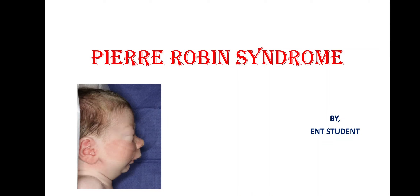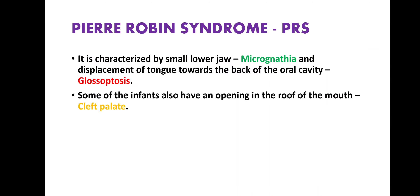Welcome to ENT Student. We are discussing Pierre Robin syndrome. Pierre Robin syndrome is characterized by a small lower jaw — micrognathia — and displacement of the tongue towards the back of the oral cavity, that is glossoptosis. Some infants also have an opening in the roof of the mouth, that is cleft palate.